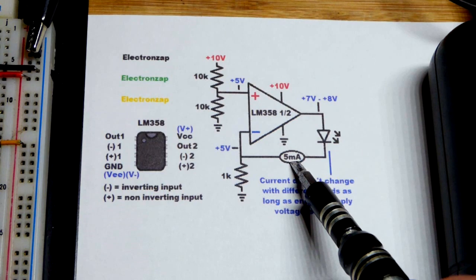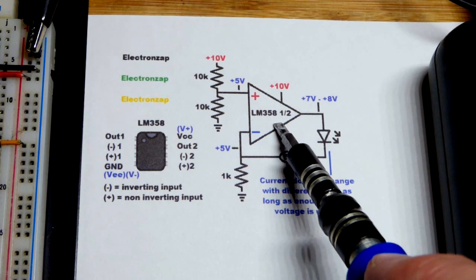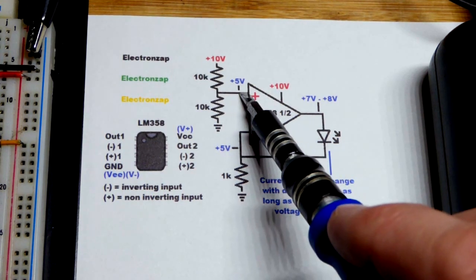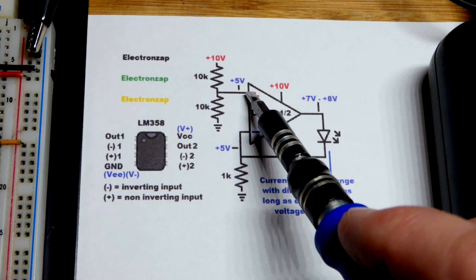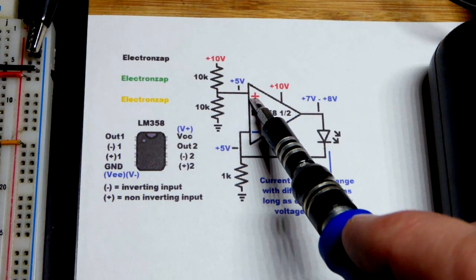The main property of an op amp, one of the main properties, is that when you have a voltage at the non-inverting input, and so I don't forget later on, you notice the non-inverting input is up here.